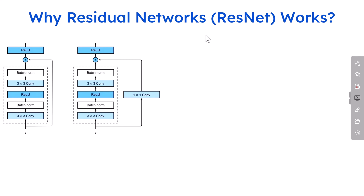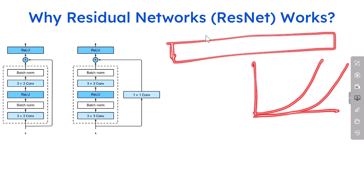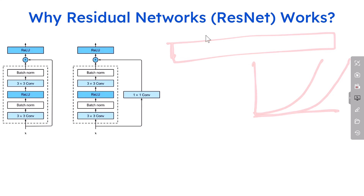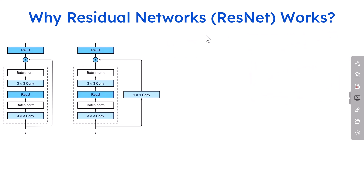ResNet addressed the challenge of training very deep neural networks. In general practice, if your neural network is too deep and you look at your training and validation accuracy, you will see that your validation accuracy will actually fall behind the training accuracy. As you increase the number of parameters, the complexity increases, and then your network does not perform well.